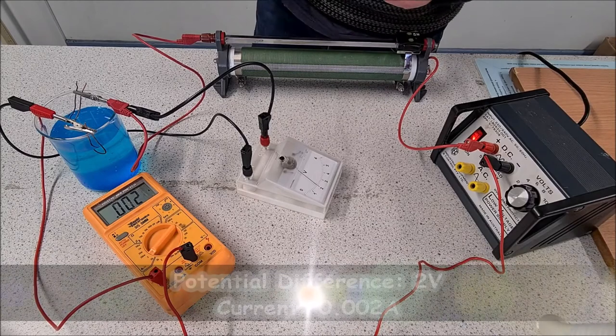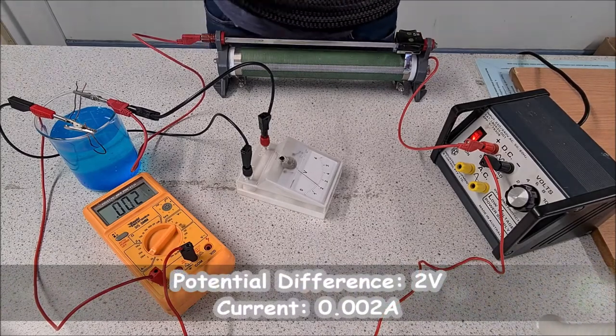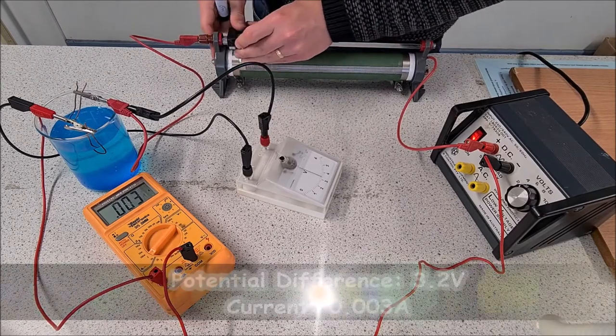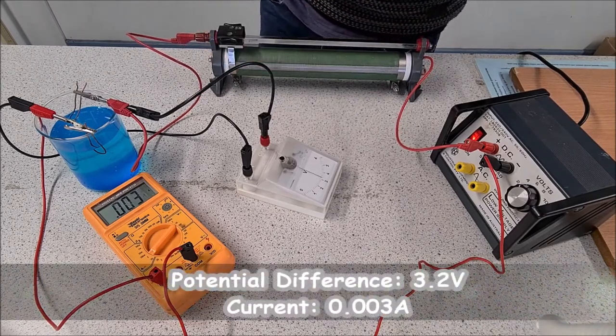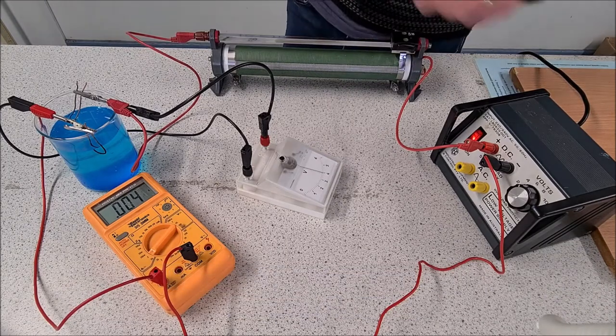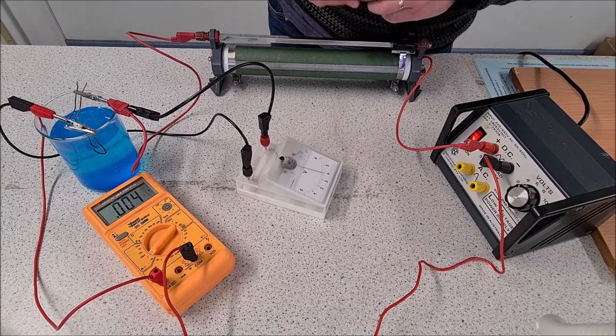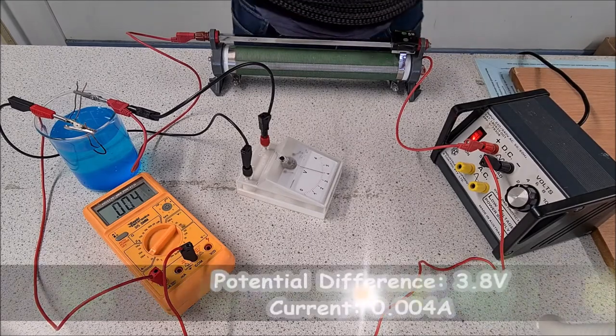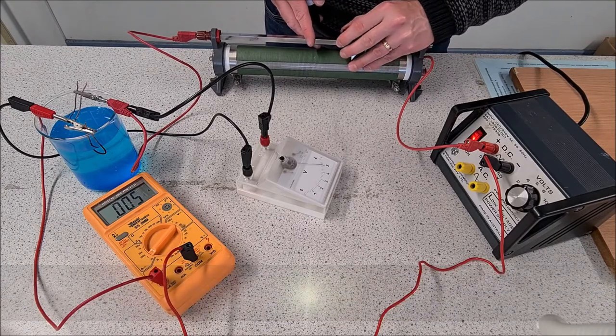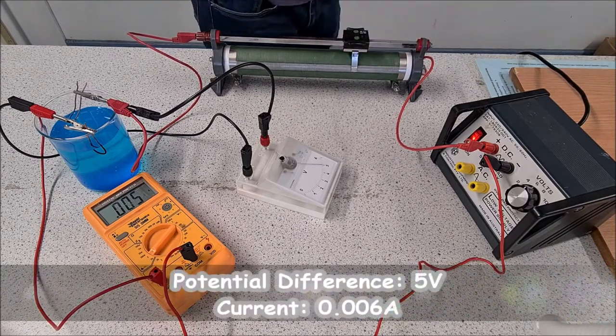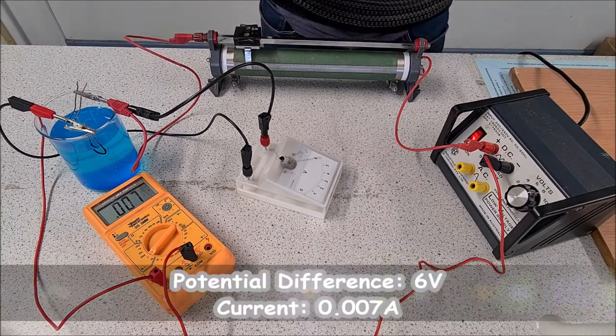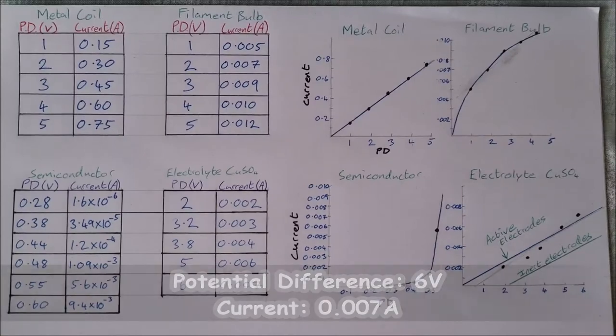So 2 volts, I have 0.002 amps. So 3.2 volts is 0.003. Can't quite get 4, so I'm going to take 3.8 volts and 0.004. So 5 volts, 0.006. 6 volts, 0.007.